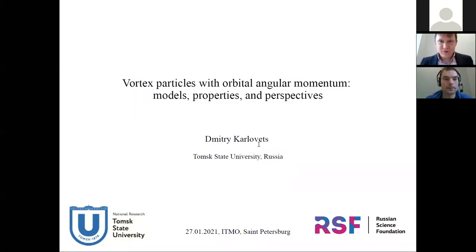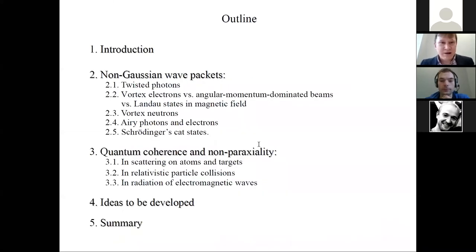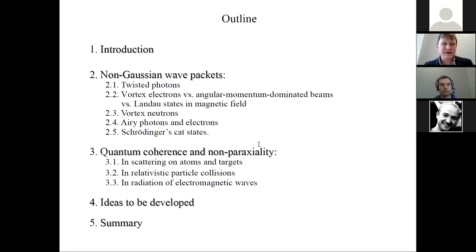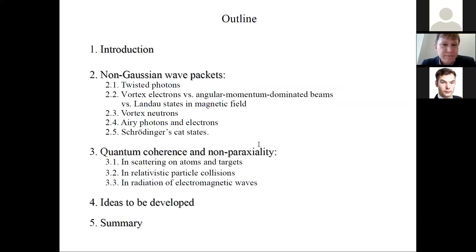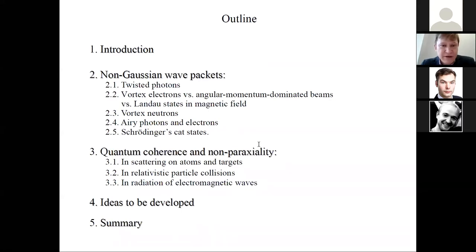Here is the short outline of my talk. I will start with non-Gaussian wave packets — when I say wave packets, I mean both massive and massless particles like photons. I will mostly concentrate on massive particles, that is electrons first and foremost, and then say some words about hadrons too. There are different types of non-Gaussian wave packets, either theoretically obtained or generated experimentally. I will comment on some possible applications of them, on scattering and collisions, on how they radiate electromagnetic waves, and then some ideas to be developed.